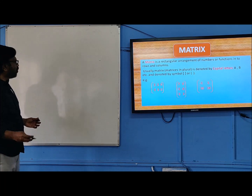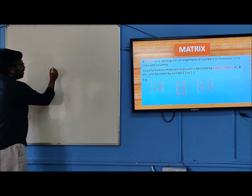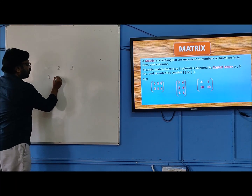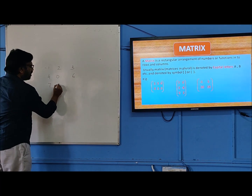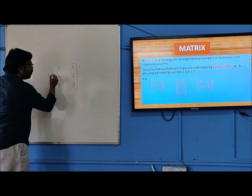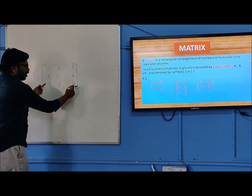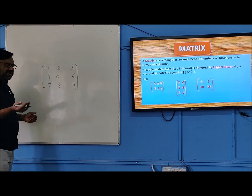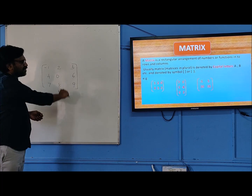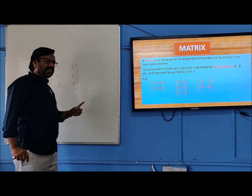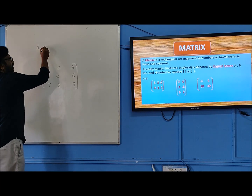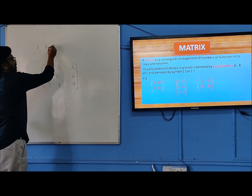A matrix is arranged into rows and columns. For example: minus 1, 2, 3, 4, 0, 6, 7, 8, 9. It is a rectangular arrangement of numbers into rows and columns. Such an arrangement is called a matrix. Generally, matrices are denoted by the capital letters A, B, C, etc.